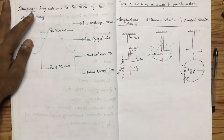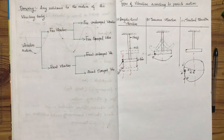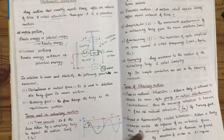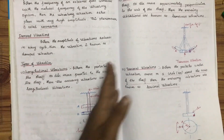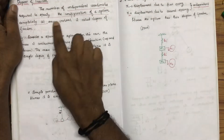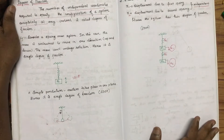Now, what is degrees of freedom? The degree of freedom is defined as the number of independent coordinates required to specify the configuration of a system. When you can represent the configuration of the system, we can define the number of independent coordinates.